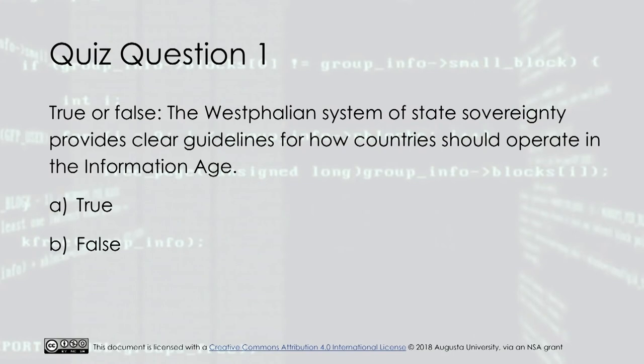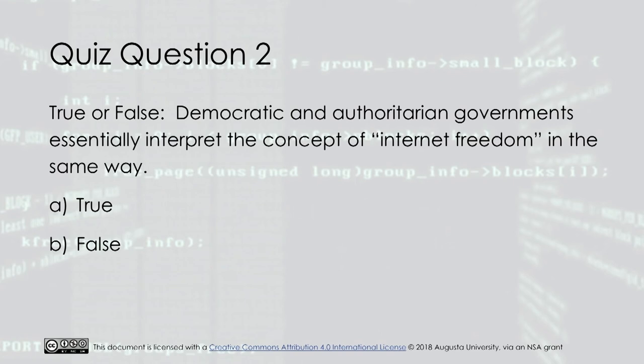Quiz Question 1. True or False: The Westphalian system of state sovereignty provides clear guidelines for how countries should operate in the information age. The answer is false. Quiz Question 2. True or False: Democratic and authoritarian governments essentially interpret the concept of Internet freedom in the same way. The answer is false.